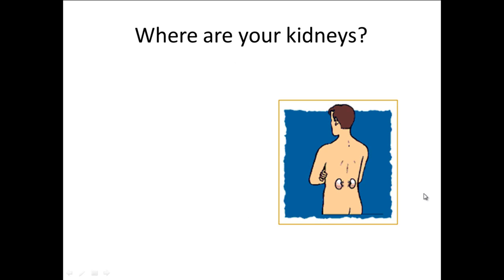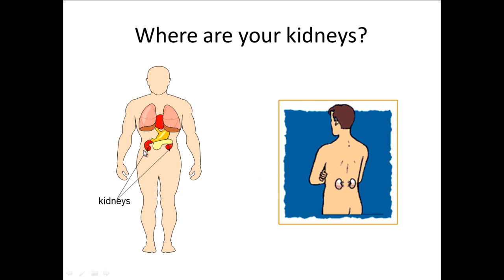If you're wondering where your kidneys are, if you were to place both your hands on your hips, the location of where your fingers are should be roughly where your kidneys are found. Now most people are actually born with two kidneys, but you can survive with just one. Those who have only one kidney need to have dialysis.